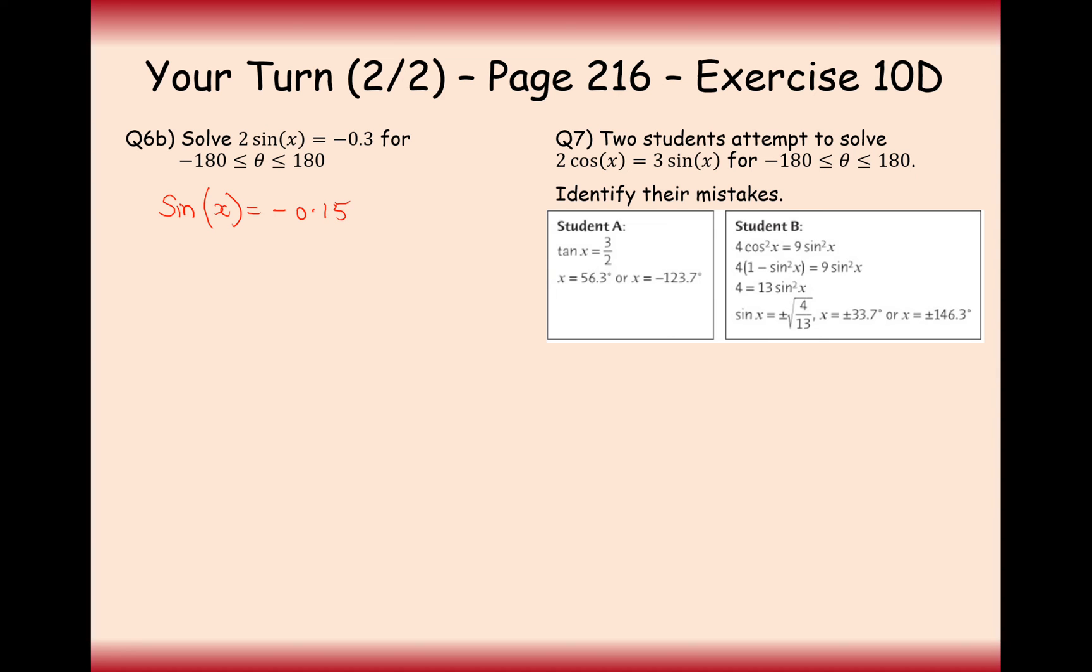Now the next thing I need to do is do inverse sine of negative 0.15, and here I get minus 8.63 degrees. And I need to find all the x values that are in between theta is minus 180 and 180. I do apologize for the theta and x mix up here. Now the sine graph in between these ranges here is going to be this and this. So at minus 0.15, I'm going to get my first solution at this point here, minus 8.63.